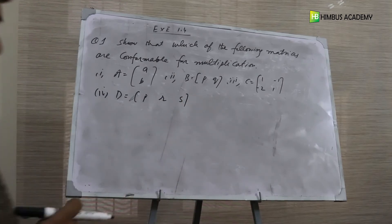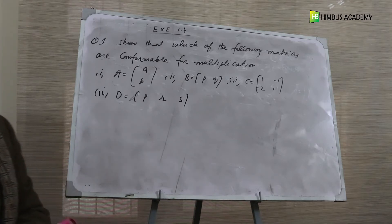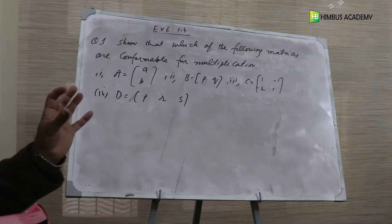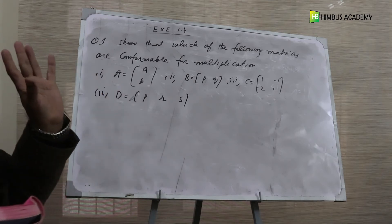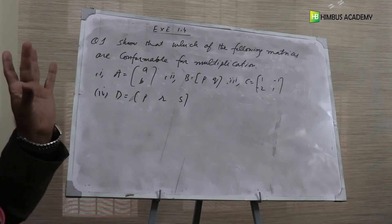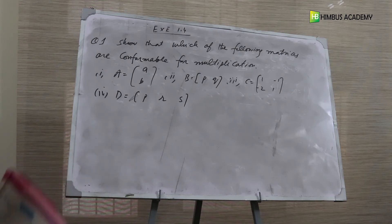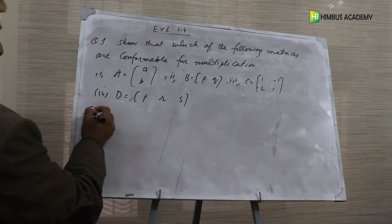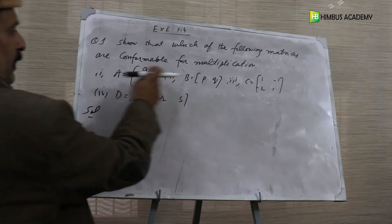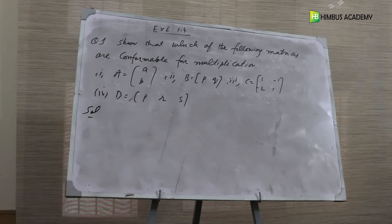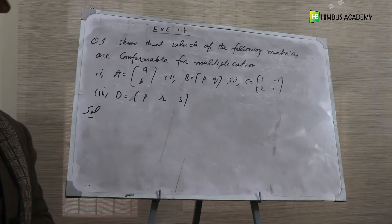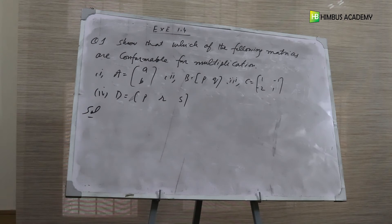Now, in matrices, you can tell which multiplications are possible. Multiplication is possible if the number of columns of the first matrix equals the number of rows of the second matrix.